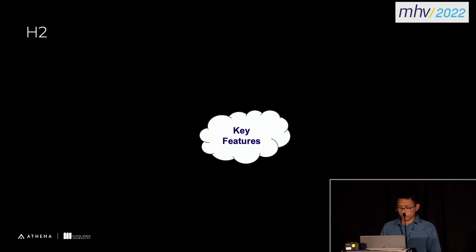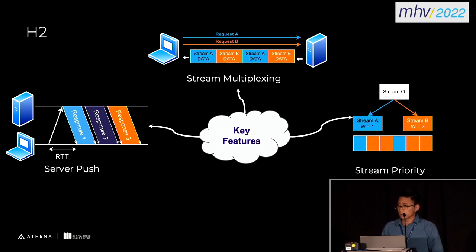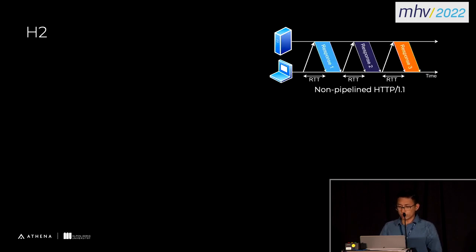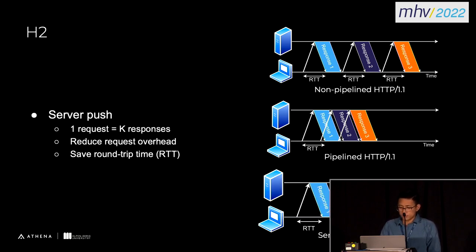In HTTP/2 we have many new features like server push, stream multiplexing, stream priority, and stream termination. With server push in HTTP 1.1, if pipelining is not enabled, we need one request to get one response and we waste one RTT to receive the response. However, when pipelining is enabled we don't waste RTT, but we still need to send many requests to the server. Meanwhile, with the server push feature in HTTP/2, we only need one request and we receive multiple responses.